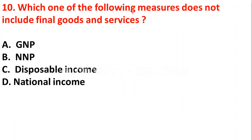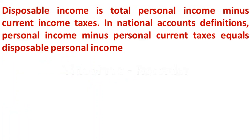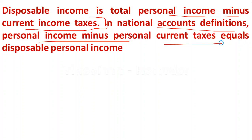The next question: which one of the following measures does not include final goods and services? A) GNP, B) NNP, C) disposable income, D) national income. In national income, GNP, and NNP, final goods and services are included. But disposable income is the amount available for spending — final goods and services are not included in it. Disposable income means total personal income minus current income taxes. In national accounts, personal income minus personal current taxes equals disposable income.